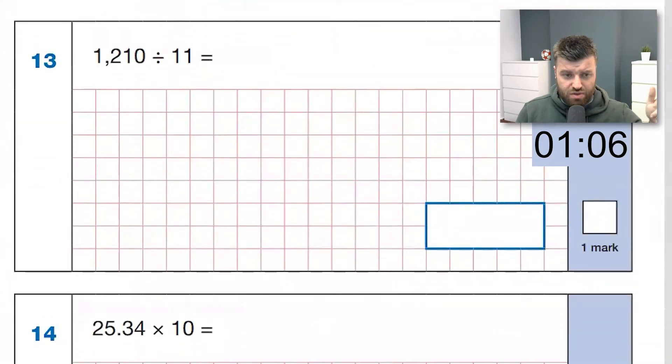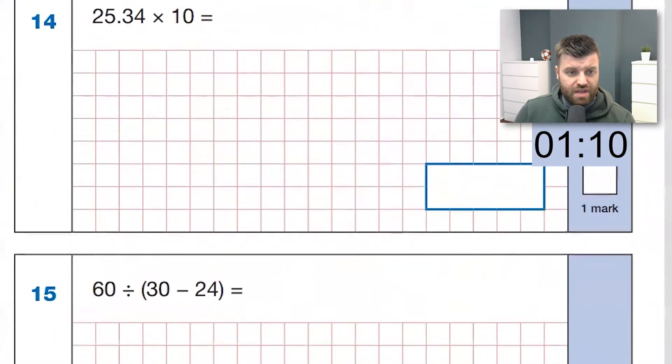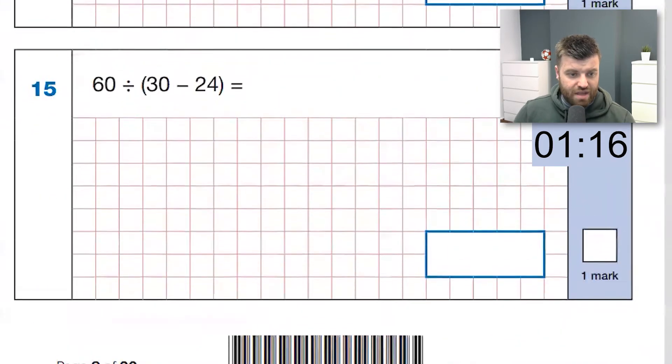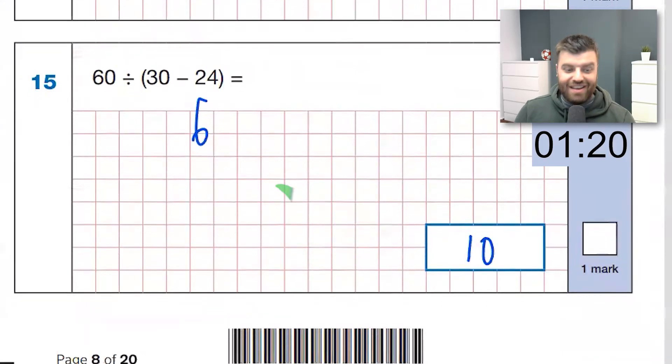Let's go here. Divide by 11. Okay, 11's into one, two, one is 11. And then make it 10 times bigger for the placeholder. Question 14, nearly went past it. Times by 10, shift those digits up. 253.4. Next one. Question 15, do the brackets first. That's six. 60 divided by six is 10.